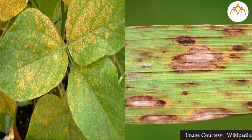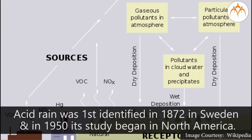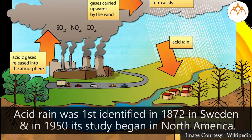Research showed that the Melampsora medusa disease on the oak tree reduced by 14% when normal rain fell on it. Acid rain was first identified in 1872 in Sweden, and in 1950 its study began in North America.